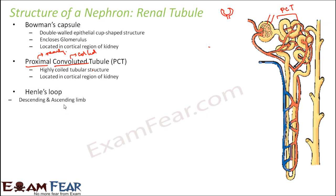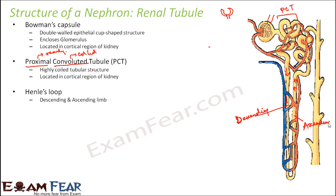Next is Henley's loop. It has two limbs — basically the Henley's loop is a U-shaped structure, that is why it has two limbs. One is the descending limb, because in this limb the fluid flows in the downward direction. The other is the ascending limb, because the fluid flows in the upward direction. It is located in the medulla of the kidney.